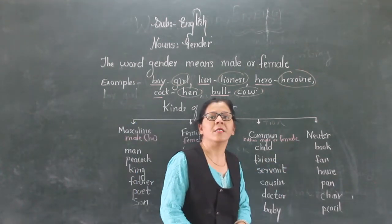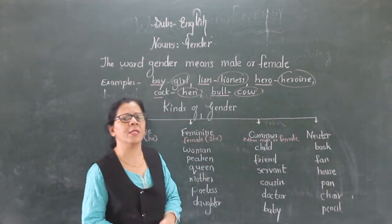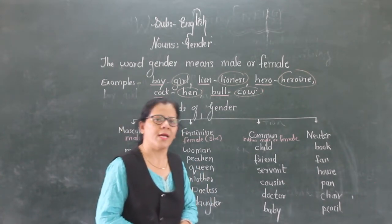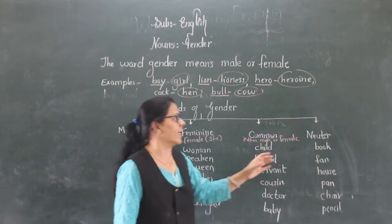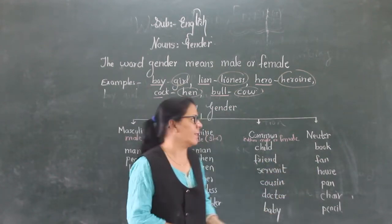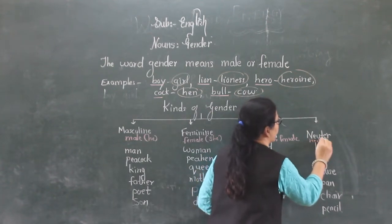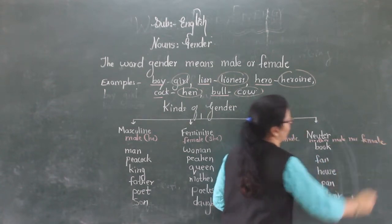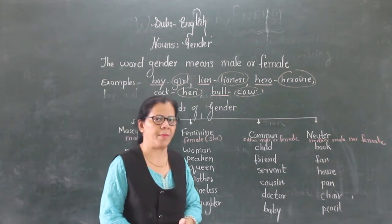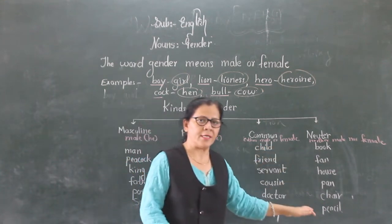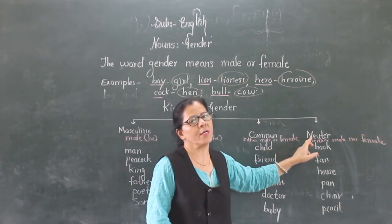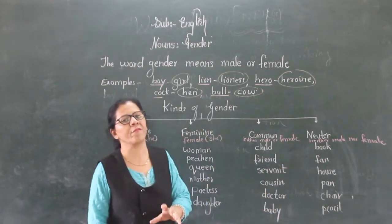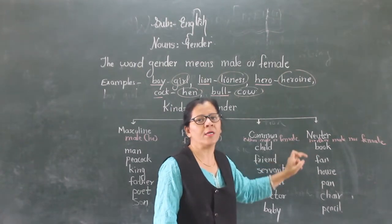Next, the fourth type is neuter gender. Neuter means non-living things — things that do not have life. For those nouns we say they are in neuter gender. That is neither male nor female. They are non-living things and hence they are said to be in neuter gender. The noun which denotes neither male nor female is said to be in neuter gender.